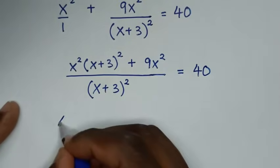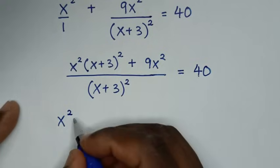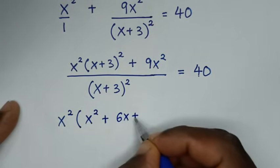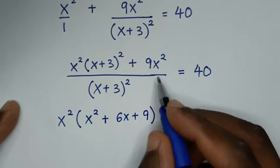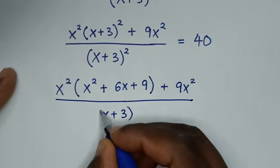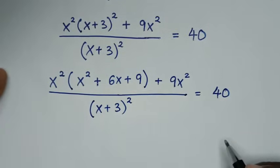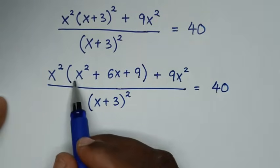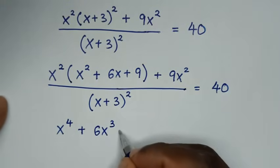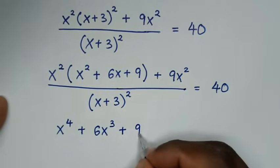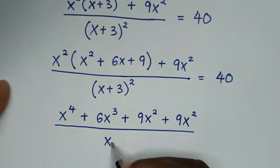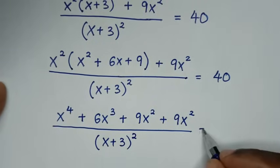Then in the next step, expanding (x+3)² gives x² plus 2 times x times 3 which is 6x, plus 3² which is 9. So we have x²(x² + 6x + 9) plus 9x², all over (x+3)², is equal to 40.